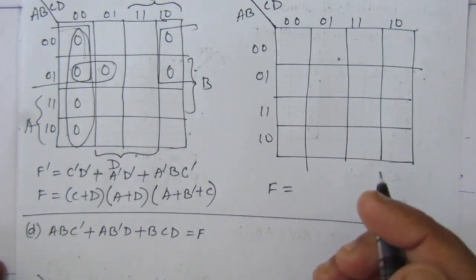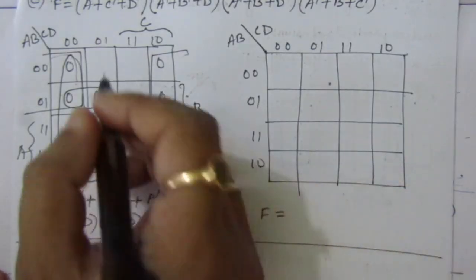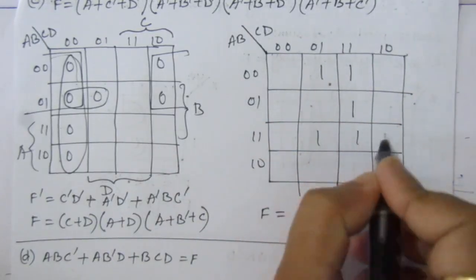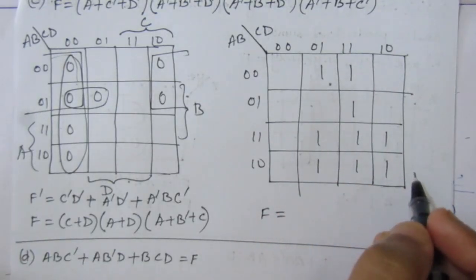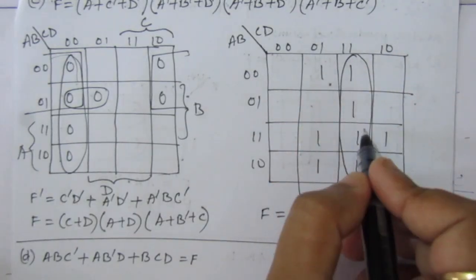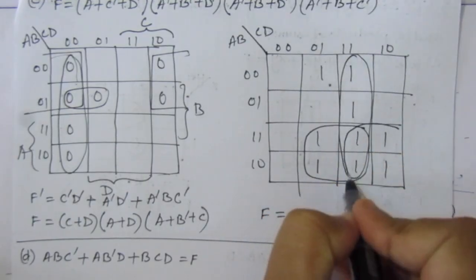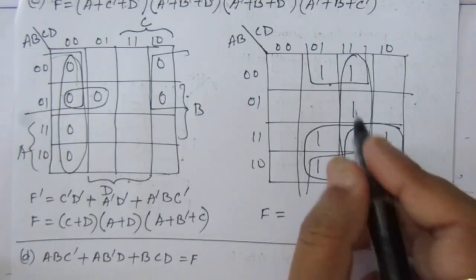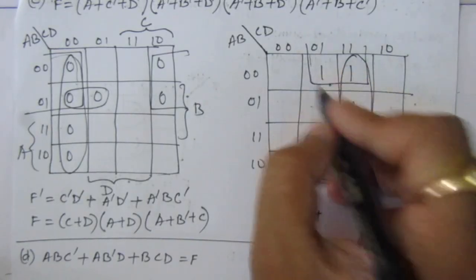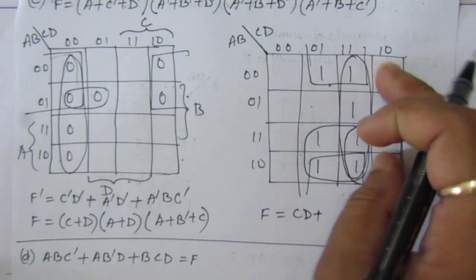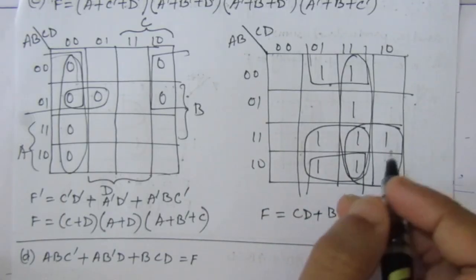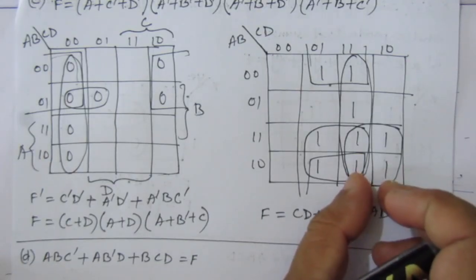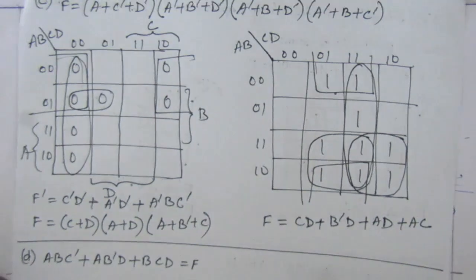Now we'll find the simplified sum of product expression by putting ones in the empty boxes of the K-map. We place ones in all the remaining cells. Combining the groups: the first term gives c d, the second term gives b-bar d, the third term gives a d, and the fourth term gives a c. So the simplified SOP expression is c d + b-bar d + a d + a c.